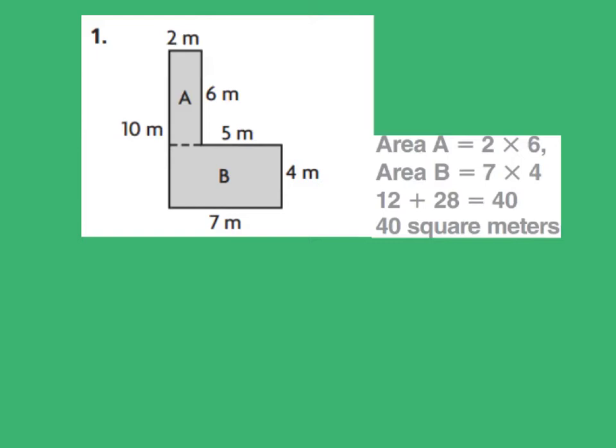We learned yesterday that the formula for area is base times height. As you can look at here for rectangle A, we have a base of 2 meters and a height of 6 meters. We made an imaginary line to cut right here to separate our two rectangles. So 2 times 6 meters equals 12 squared meters.